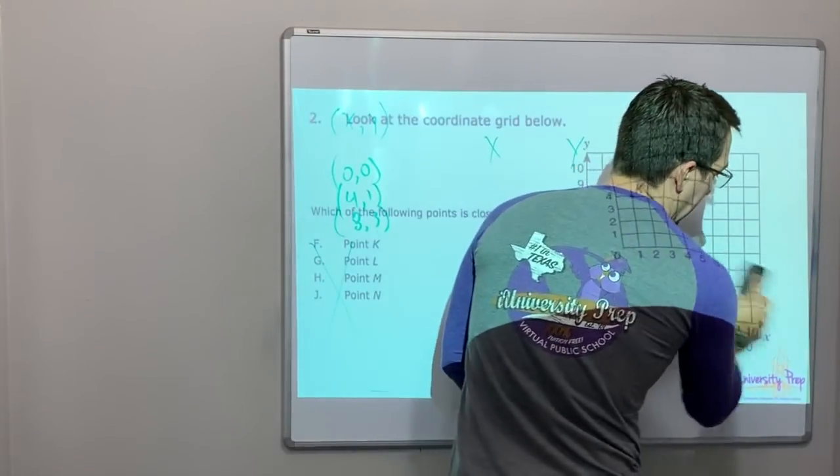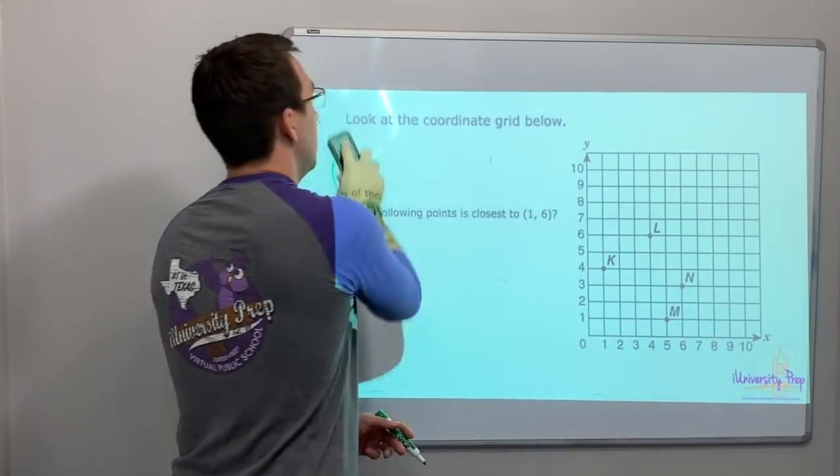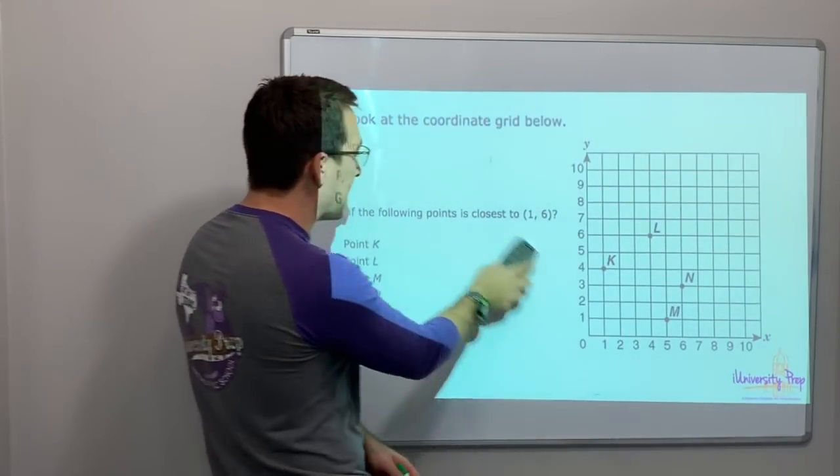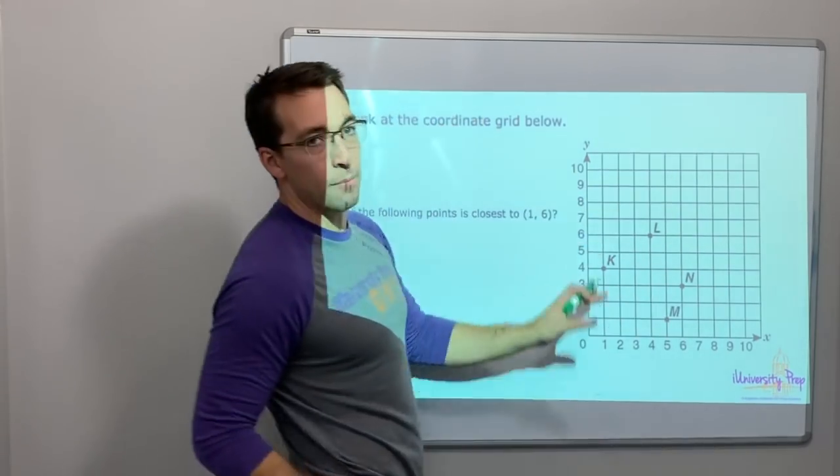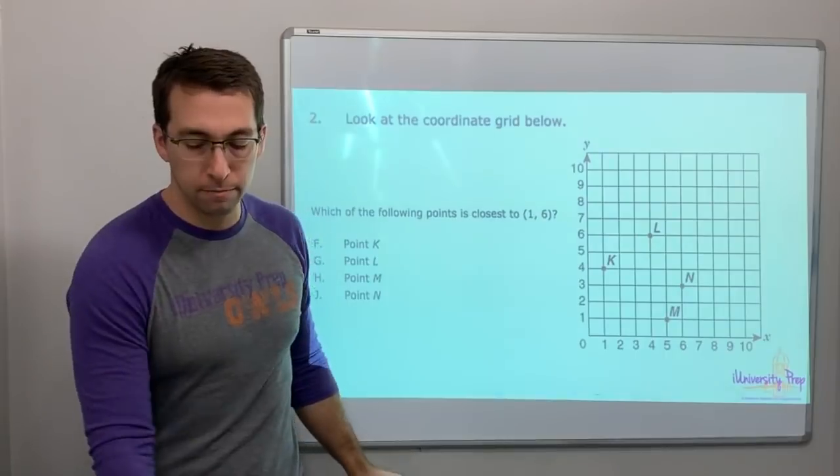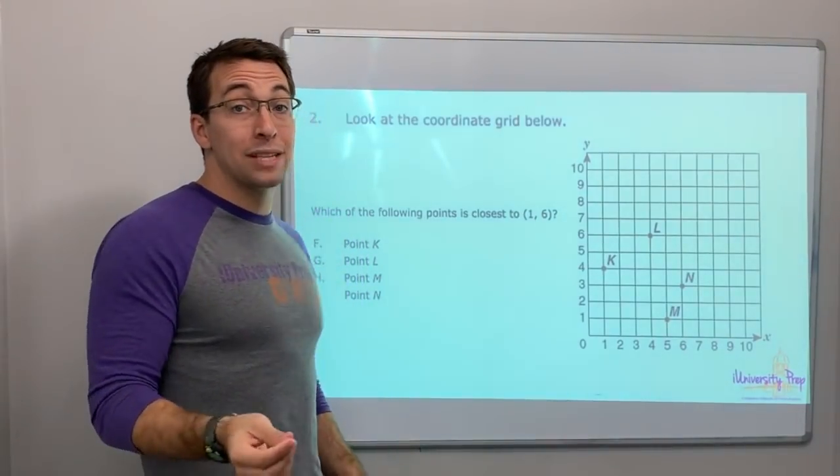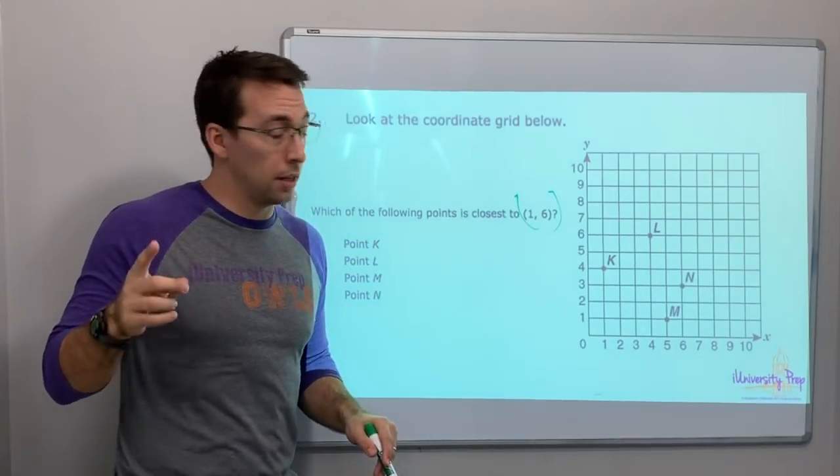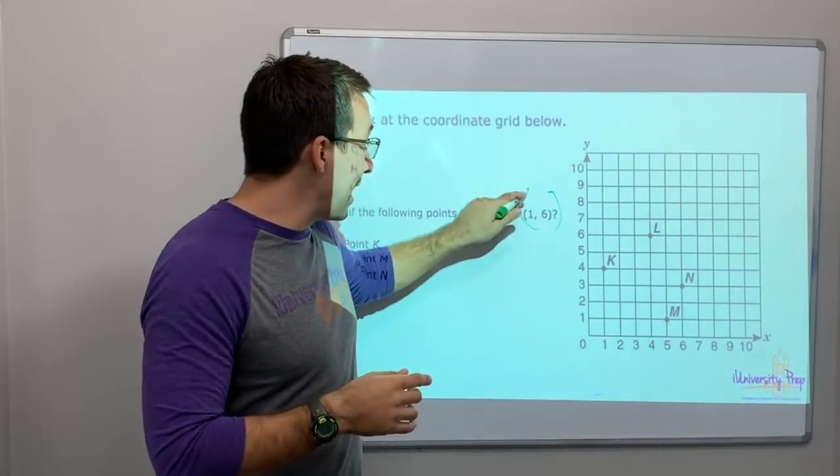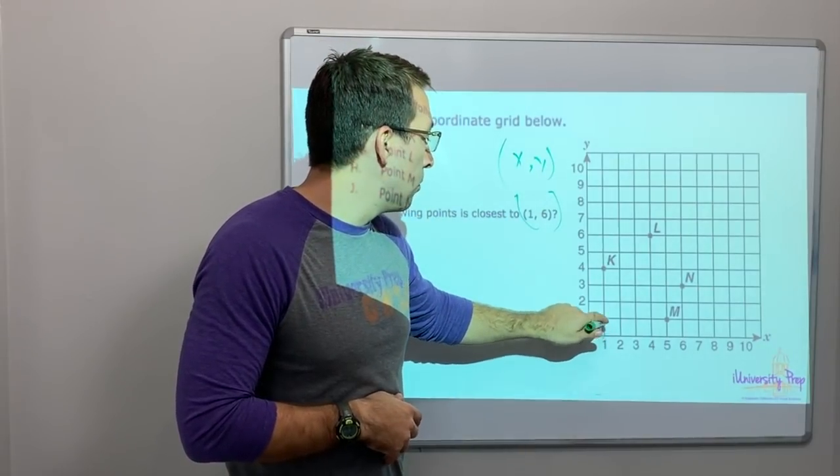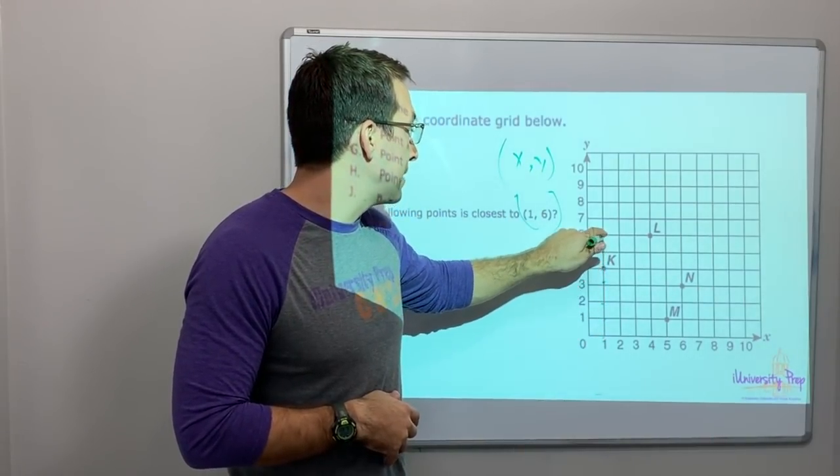Look at the coordinate plane below. The coordinate grid, the coordinate plane - it's the same thing. This is a table. It's got your x value and then it has your y values. Which of the following points is closest to one six? So let's find one six first. We're going x first and then y. So one, one, two, three, four, five, six.